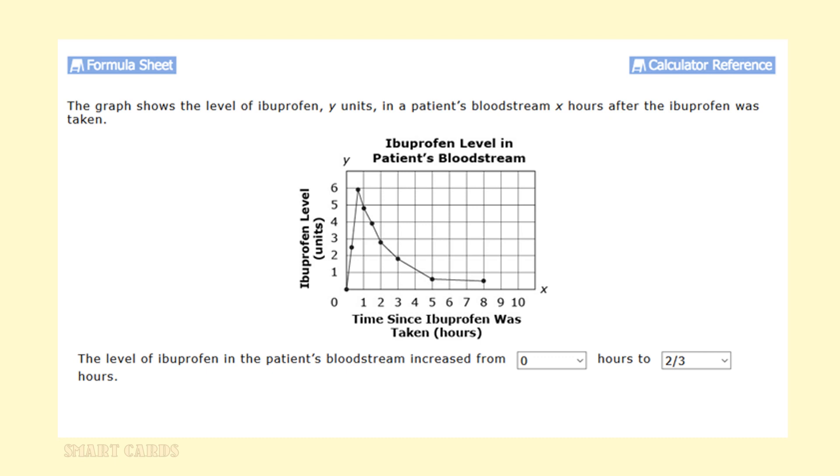The graph shows the level of ibuprofen, y units, in a patient's bloodstream x hours after the ibuprofen was taken. The level of ibuprofen in the patient's bloodstream increased from what hours to what hours. Let's look at the four signals in this problem. We need to know the time, which is the horizontal axis or x-axis. We need to know the level of ibuprofen, which is the vertical axis or y-axis. We need to look at the data in the graph, and we need to determine the time frame of the increase.